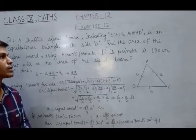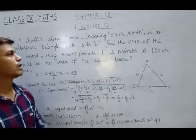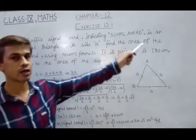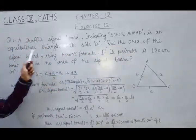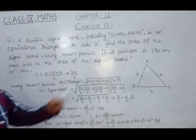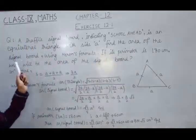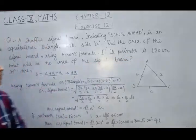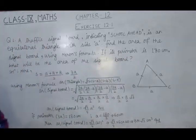Hello everyone, today we will discuss few problems from exercise 12.1. Question 1 is a traffic signal board indicating school ahead, which is an equilateral triangle with side small a. Find the area of the signal board using Heron's formula. If its perimeter is 180 cm, what will be the area of the signal board?